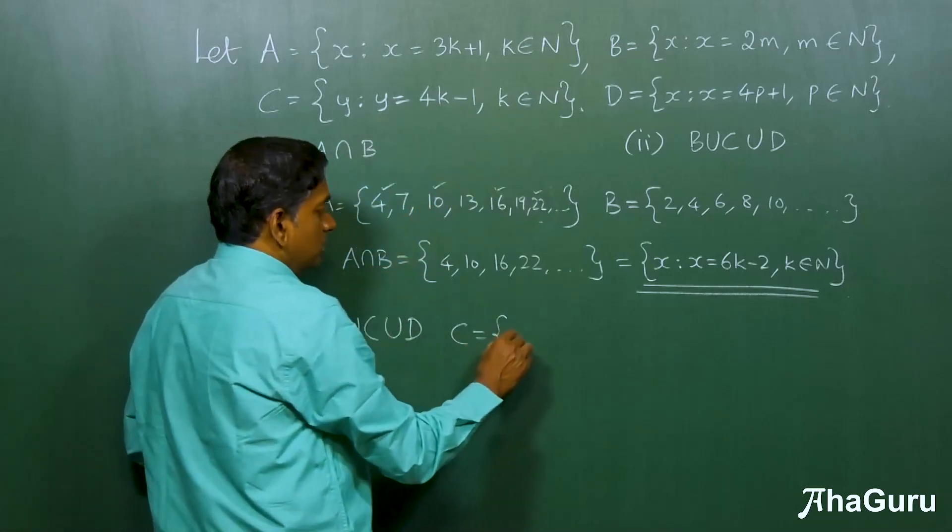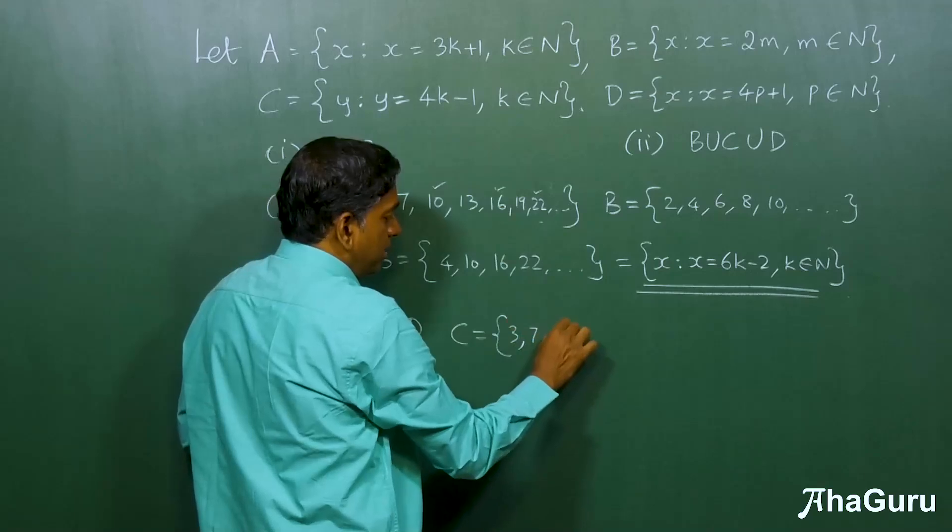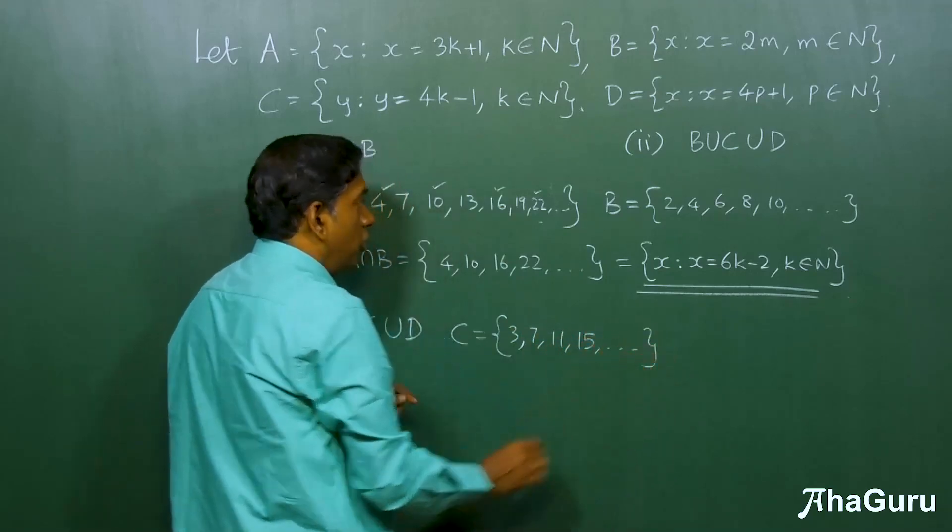So, that means, substitute 1, 2, 3, etc. You get 3, then 7, 11, 15, and dot dot dot.